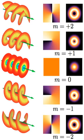the handedness determined by the sign of m, the wavefront is shaped as a single helical surface with a step length equal to the wavelength λ.